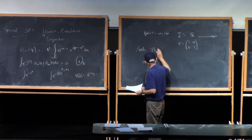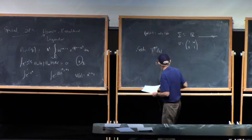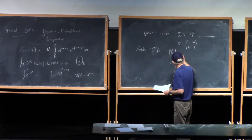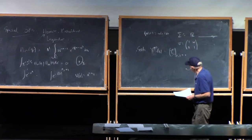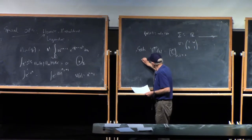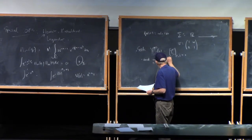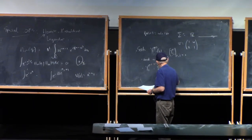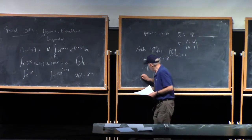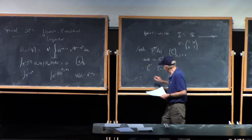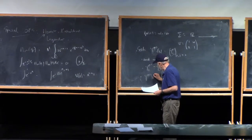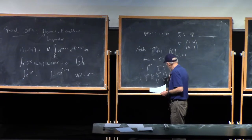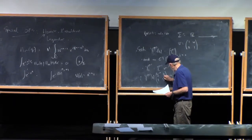The Riemann-Hilbert problem one wants to solve is you seek y of z, which will depend on the parameter n, and that is two-by-two. It is analytic in C take away R. And y plus of n equals y minus of n times this v. The way it is normalized is not in the standard fashion. It's not what we call a normalized Riemann-Hilbert problem in the standard sense, but it has this property: z to the minus n, 0, 0, z to the n goes to the identity as z goes to infinity.